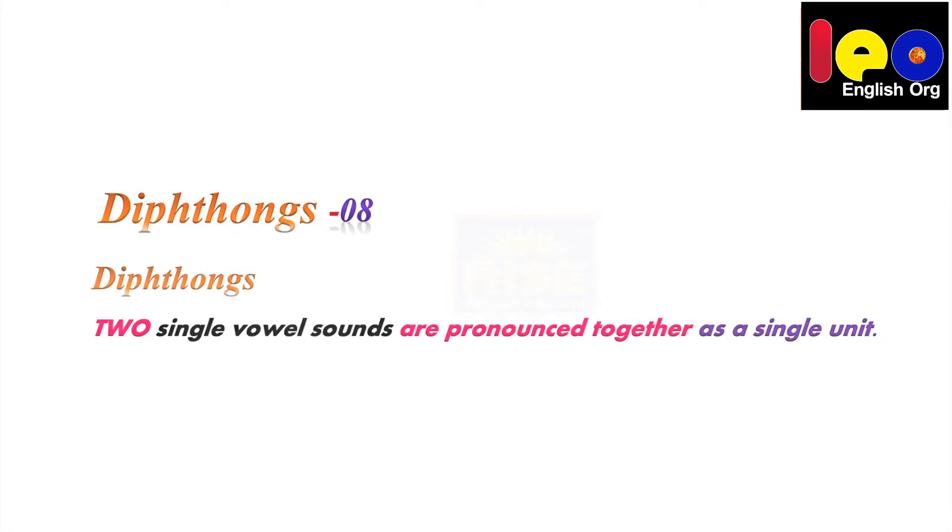So far we have learnt about 10 IPA symbols and 12 monophthongs. Now we are going to learn about 8 diphthongs. Diphthongs are two single vowel sounds that are pronounced together as a single unit.